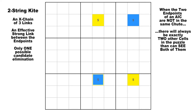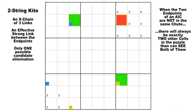Those four cells will always form a rectangle or a square. But in a two-string kite, one of the two cells that can see both endpoints will always be in the block with the weak link — the tail of the kite. If there were a candidate in that cell, it would negate both strong links and ruin the pattern. Thus there can only ever be just one candidate elimination, and there may not be any.